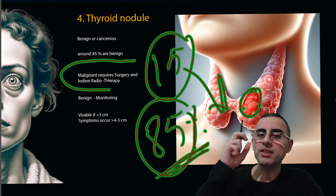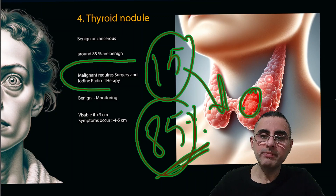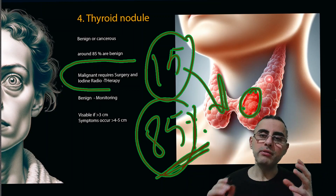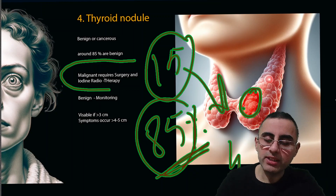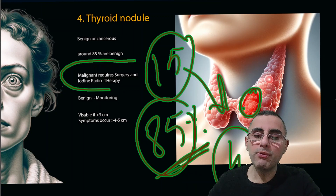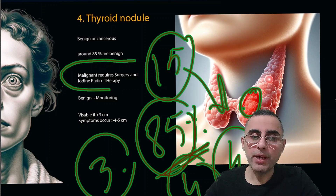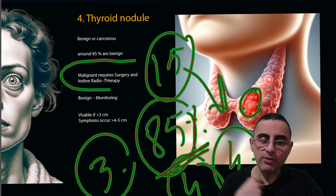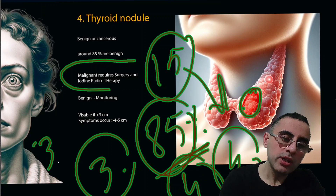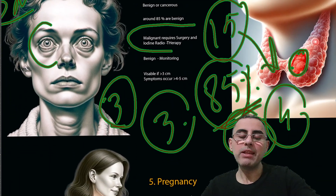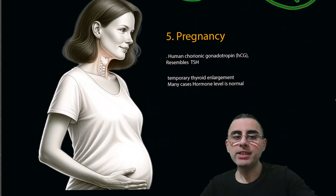Regarding how large a nodule must be to be visible with the naked eye, it generally needs to be more than three to four centimeters. To cause symptoms such as difficulty swallowing, a nodule should be larger than three centimeters; for difficulty breathing, more than four centimeters; and for hoarseness, around three centimeters or more. So thyroid nodules need to be large enough to cause symptoms.